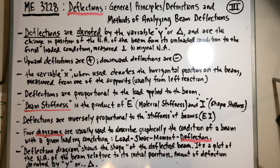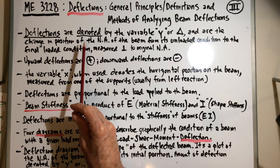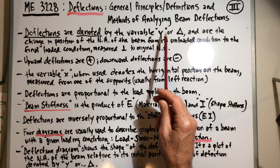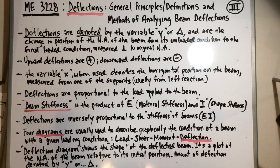When talking about deflections, any equation you'll be working with uses a variable — usually y, or sometimes delta depending on what table you're looking at. Deflection is the actual change in position of the neutral axis of the beam, from its unloaded condition to the final loaded condition, measured perpendicular to the original neutral axis.